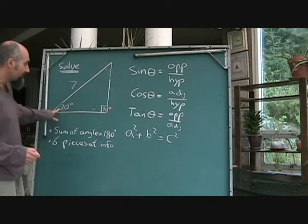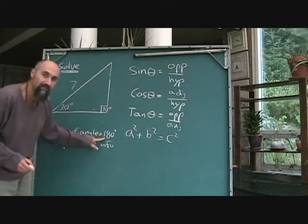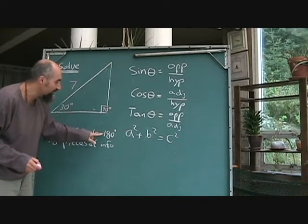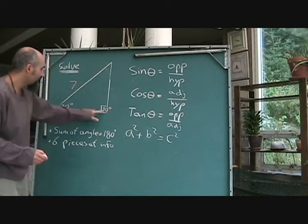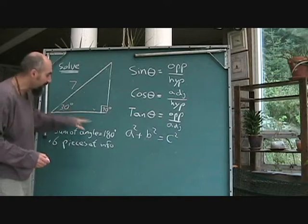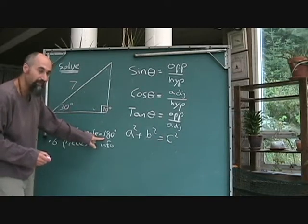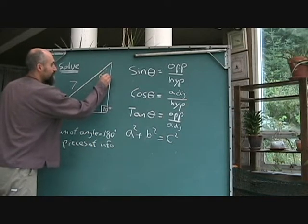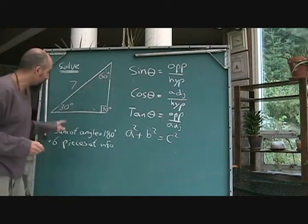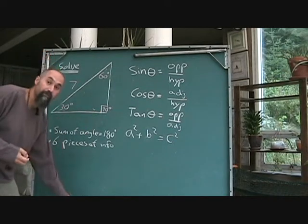Now, if you know this is 30 and we know that the sum of the angles in a triangle is 180, then all you do is go 90 plus 30 is 120. 120 minus 180 is 60. So if you know two pieces of information, you can get the third one.